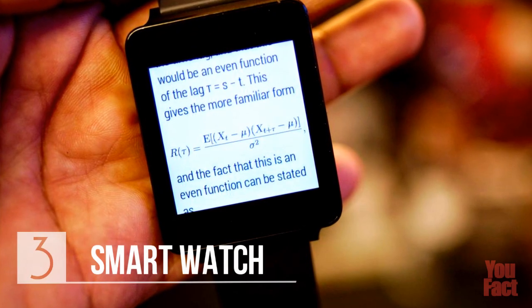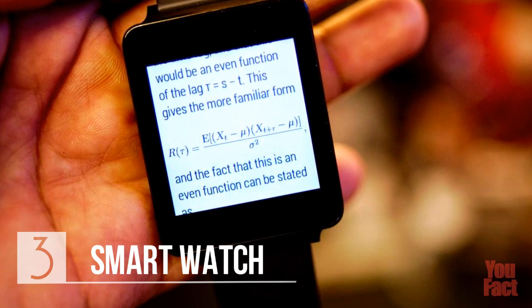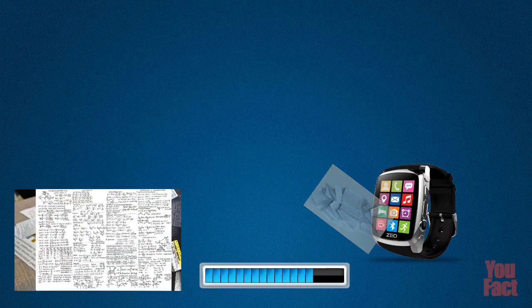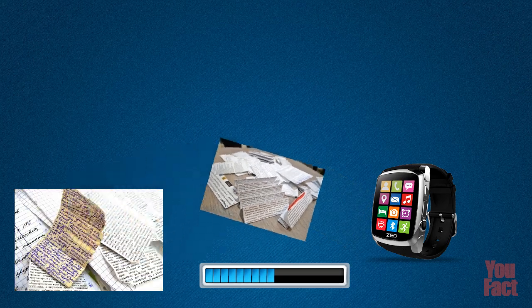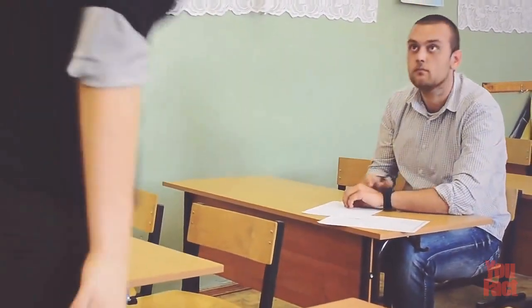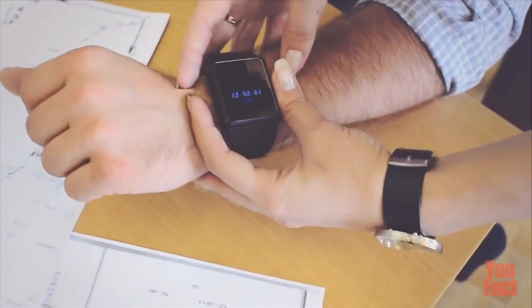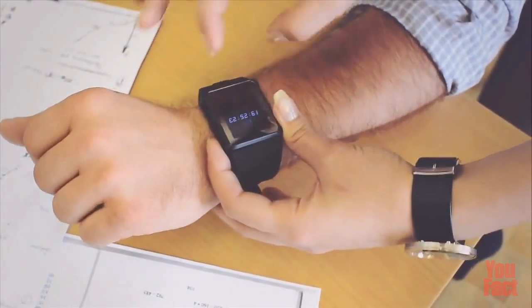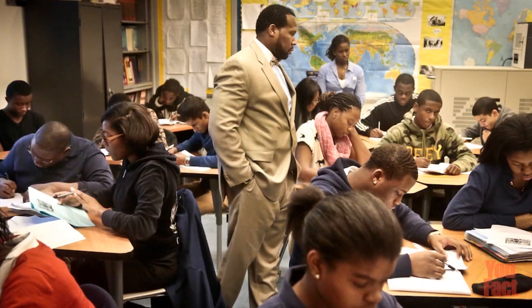Of course, it is impossible to ignore smartwatches, which are very popular today. You can download infinitely many cheat sheets and cheat on the exam. There is a built-in panic button in the watch, all smart functions are blocked and the gadget only shows the time when you push it. But if the teacher stands behind you, the watch will not help you.